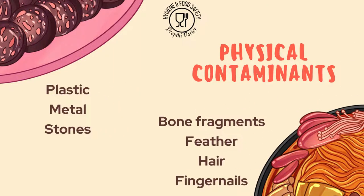The next set of contaminants are physical contaminants — those which you can actually see in the food. These include plastic pieces and metal pieces; metal is the most important physical contaminant in food. They can also include stones, glass pieces, bone fragments, and jewelry of the person cooking or serving the food if it falls into the food. Feathers, animal hair, human hair of the person handling the food, and fingernails are all examples of physical contaminants.